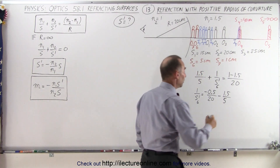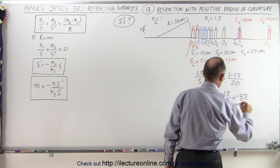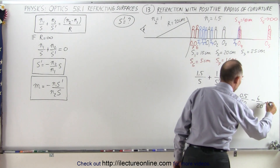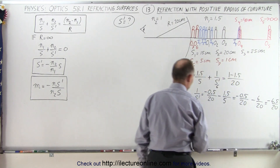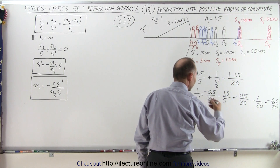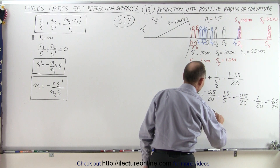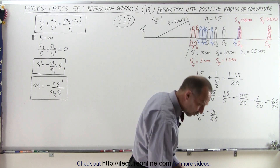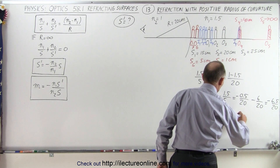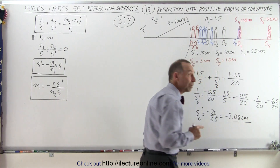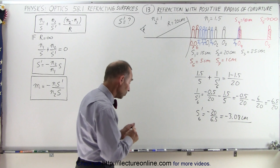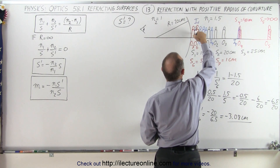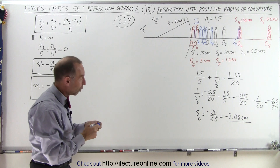This is equal to negative 0.5 over 20, and that becomes minus 1.5 over 5. The common denominator is 20, so this becomes equal to minus 0.5 over 20 and minus 6 over 20. That becomes equal to minus 6.5 over 20, which means s6 prime is equal to minus 20 over 6.5 — about 3.08 centimeters — and it's negative: negative 3.08 centimeters. The negative implies it's still on the same side as the object, and 3 centimeters means it's a little bit closer than the object. So here this would be the image — Image 6 — a little bit closer than the object: 3 centimeters versus 5 centimeters away from the boundary.